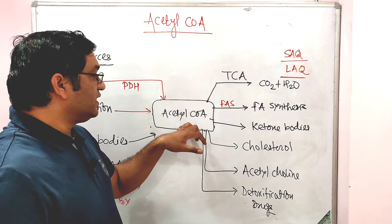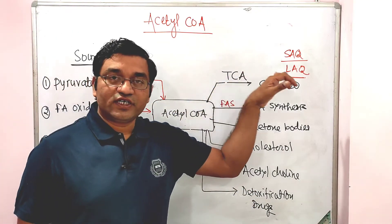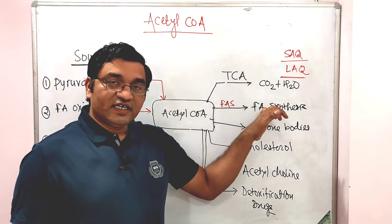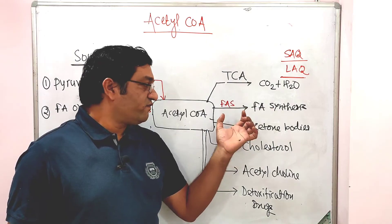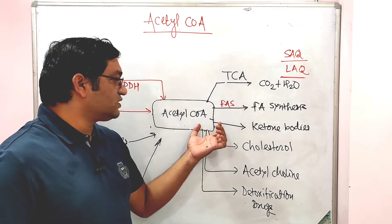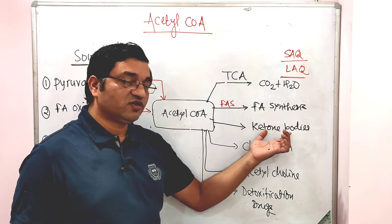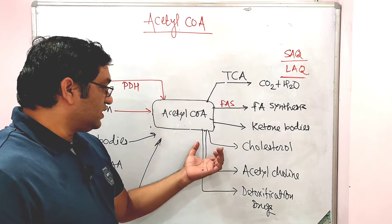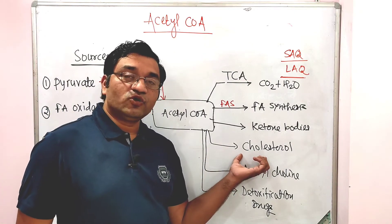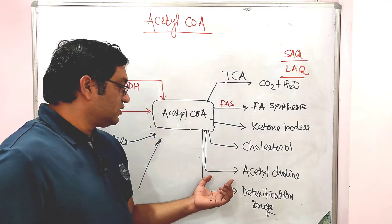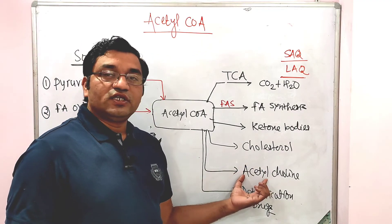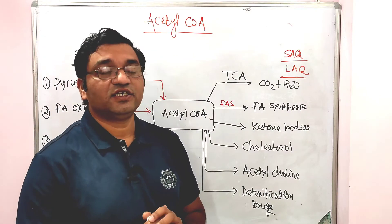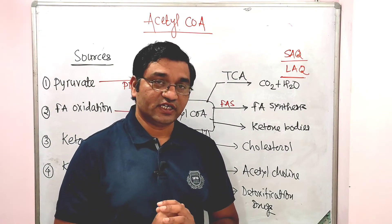In summary, the utilization of acetyl coenzyme A includes: entry into the TCA cycle producing water and CO2; fatty acid synthesis via the fatty acid synthesis complex; conversion into ketone bodies — acetone, acetoacetate, and beta-hydroxybutyrate; cholesterol synthesis; acetylcholine synthesis; and detoxification of various drugs.